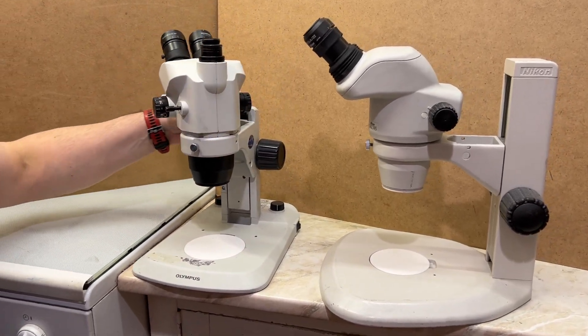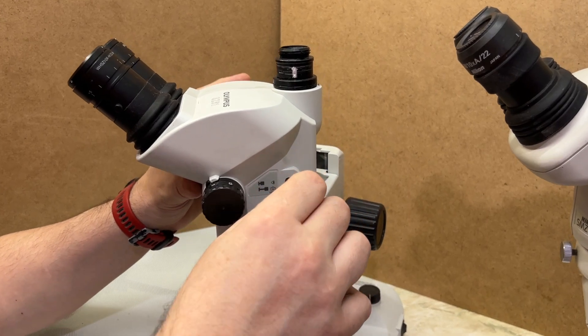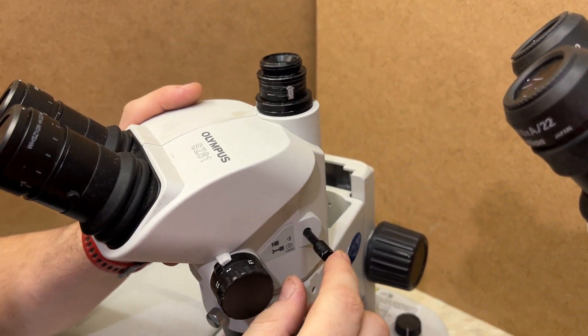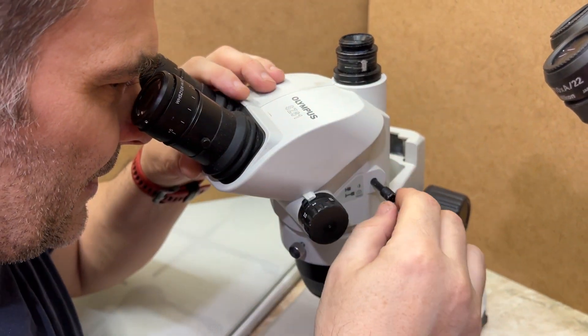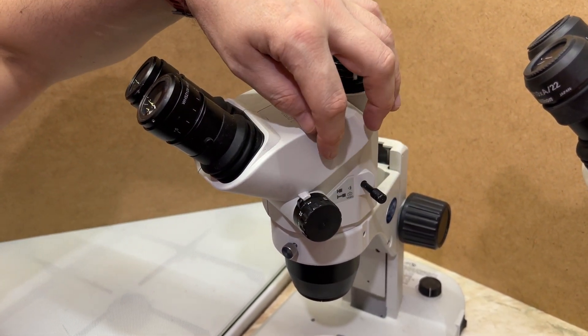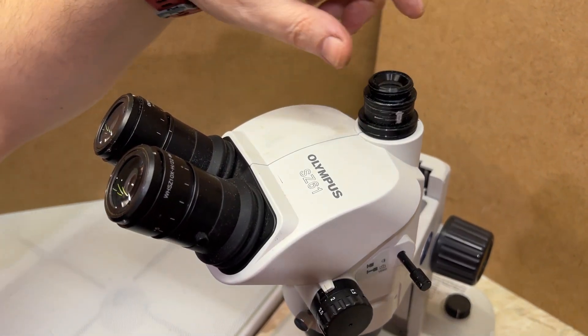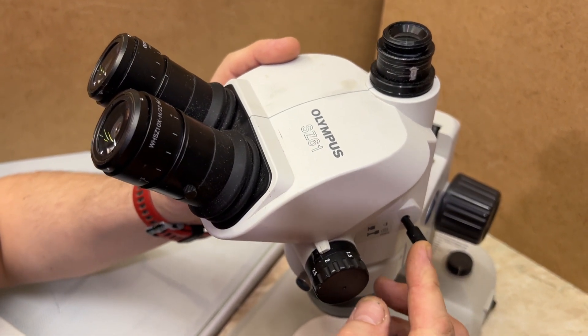This is the Olympus CZ61T with trinocular. When we pull this lever we are losing one of our channels and the picture from that right channel goes to the third port. When we push the lever back we are getting ordinary binocular mode.